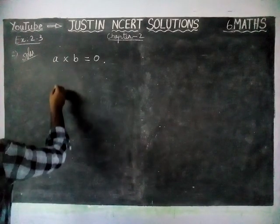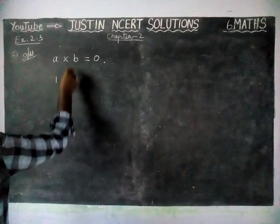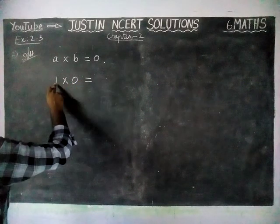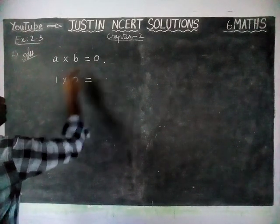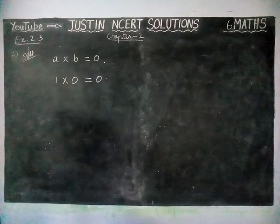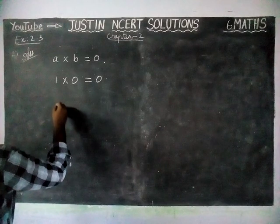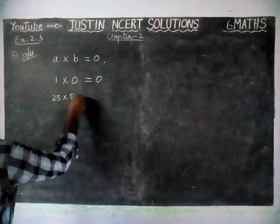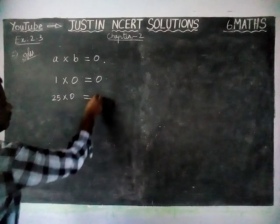For the A value, we will take it as 1, and we will take B equal to 0. A into B is equal to a whole number. 1 into 0 is equal to 0. One number we have taken as 0. We will take some other example: 25 into 0 is equal to 0.